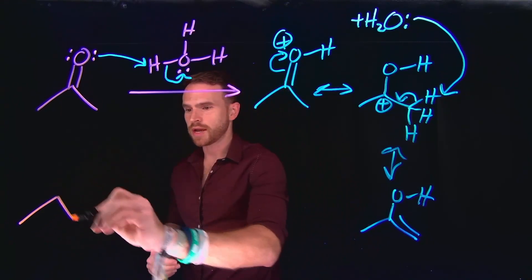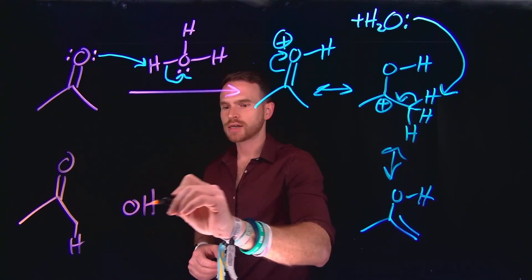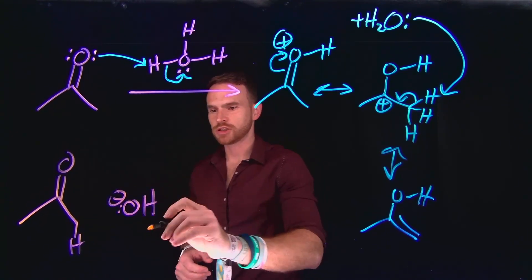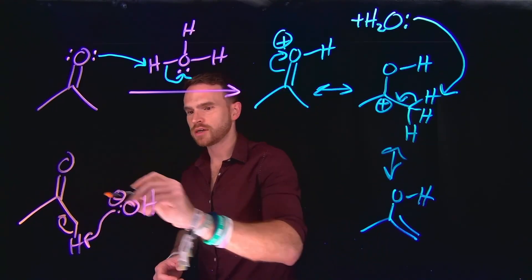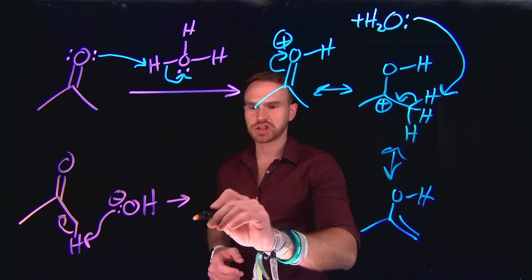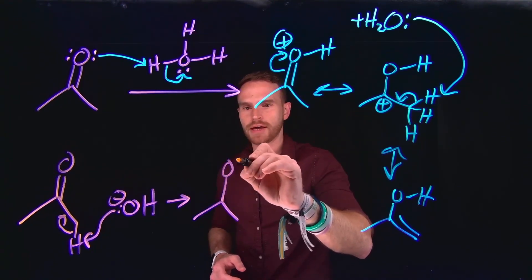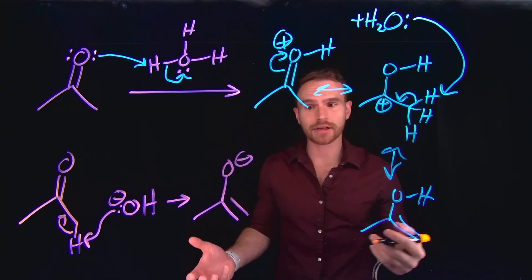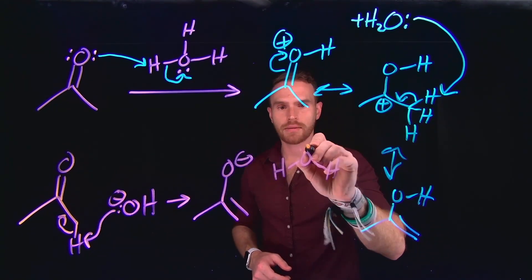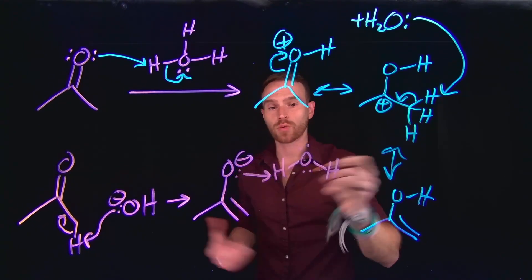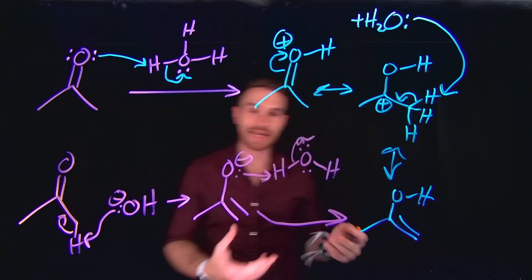Similarly, we could generate an enol through the addition of a base. Hydroxide, for example, which is negatively charged, could come in and deprotonate that alpha carbon hydrogen, which would move its electrons down, allowing us to generate a similar intermediate species where now we have a negatively charged oxygen — this is called an enolate. Since we have generated water in this mechanism, the oxygen atom can come and regenerate our base and form the exact same enol species.